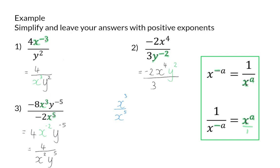A quicker way to approach example three: when there are more x's in the denominator, the remaining x's will stay in the denominator. You can then work from the denominator upwards — five minus three gives three — to immediately arrive at the positive exponent without the extra step of moving terms.